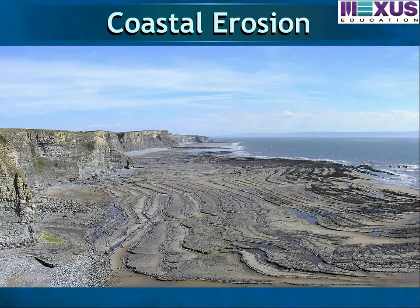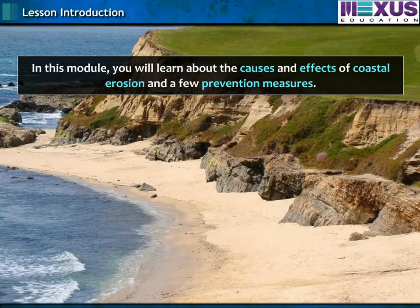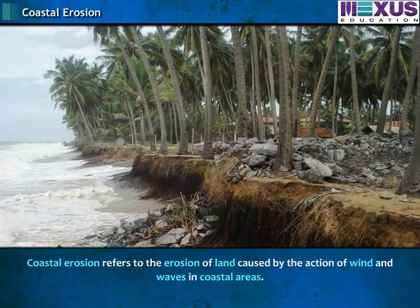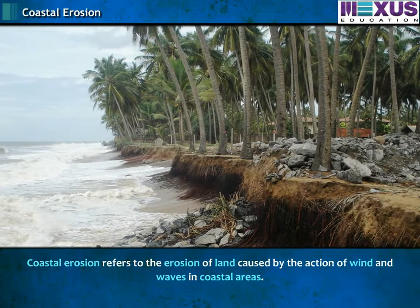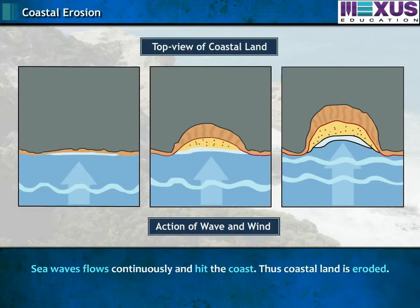Coastal Erosion. In this module, you will learn about the causes and effects of coastal erosion and a few prevention measures. Coastal erosion refers to the erosion of land caused by the action of wind and waves in coastal areas. Sea waves flow continuously and hit the coast, thus coastal land is eroded.